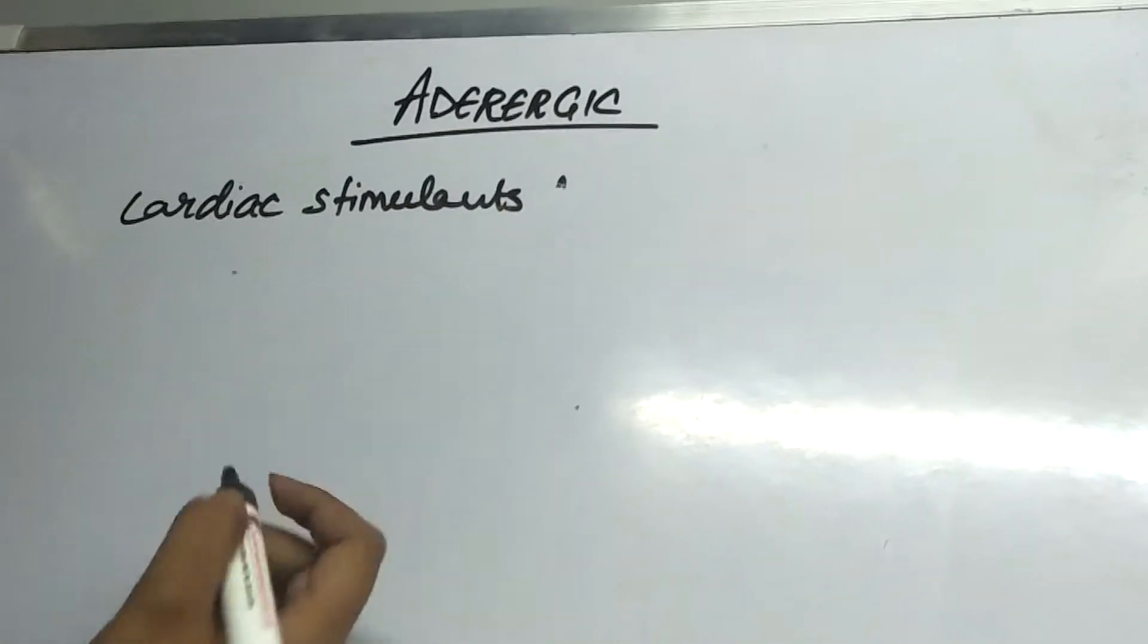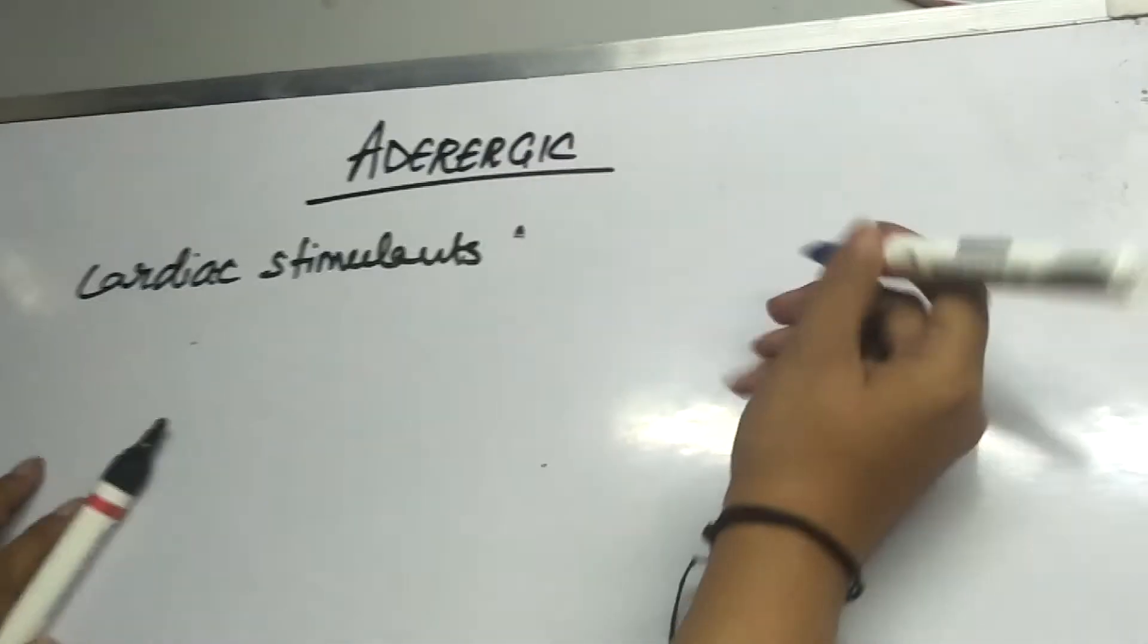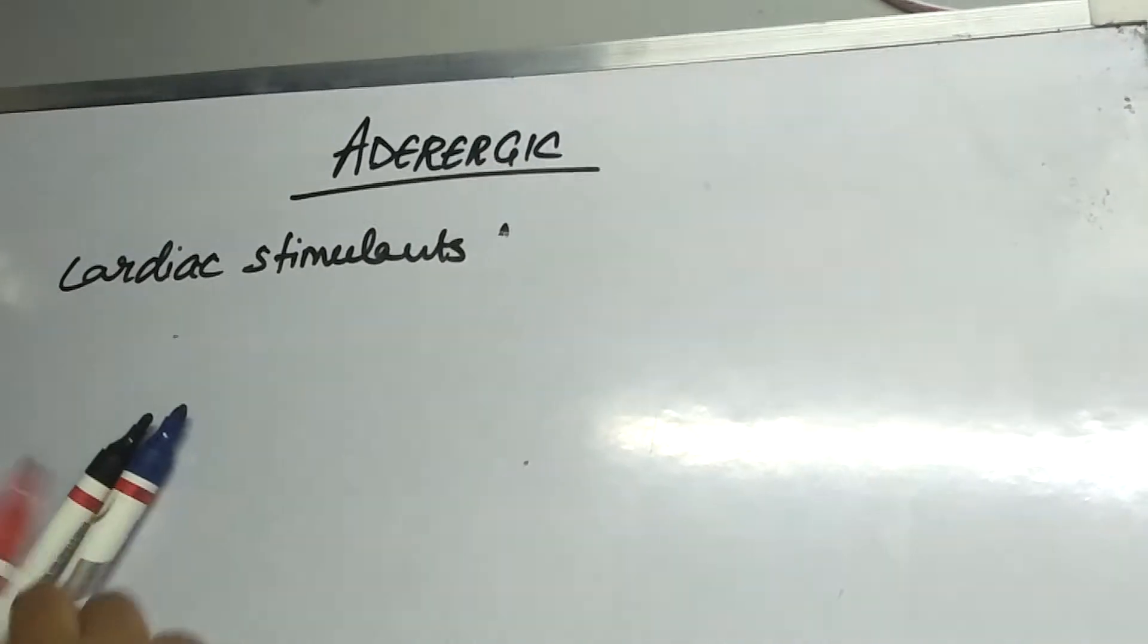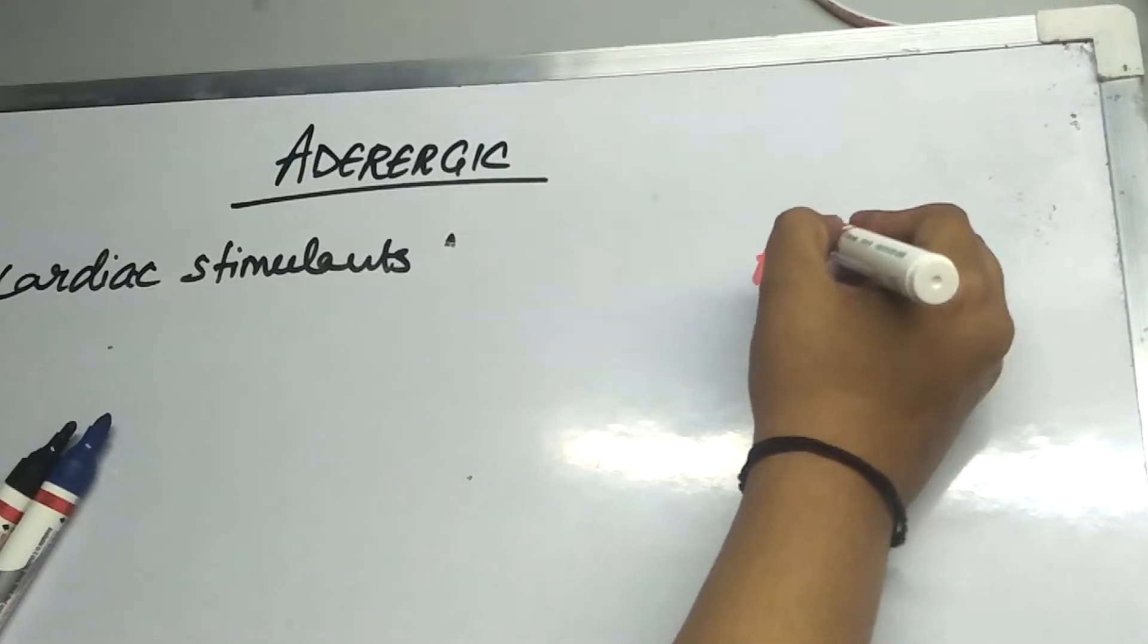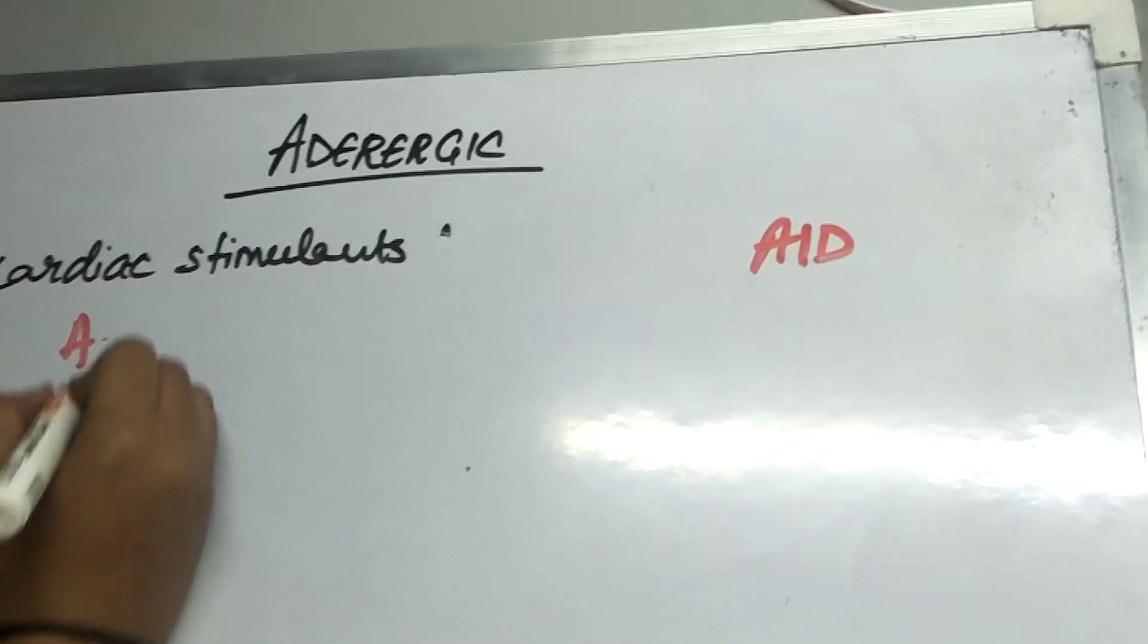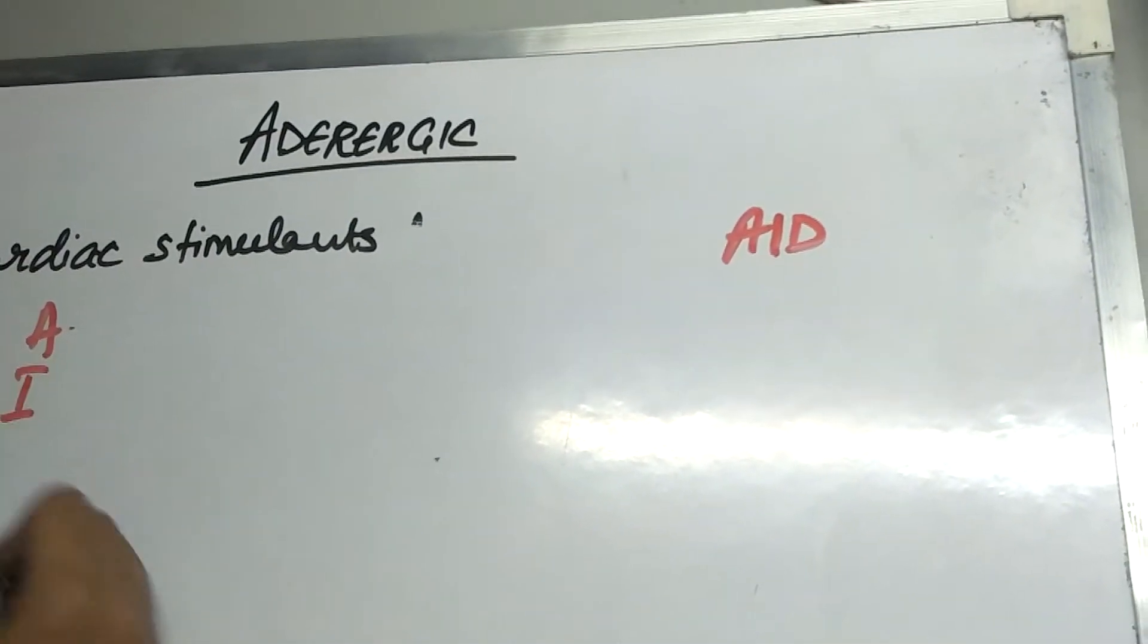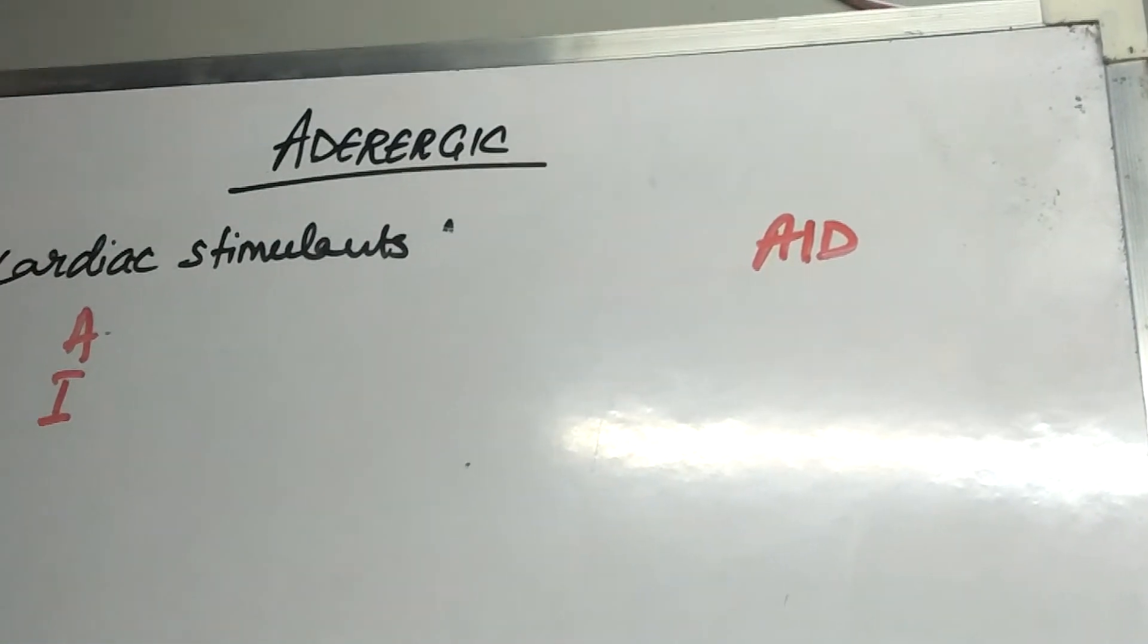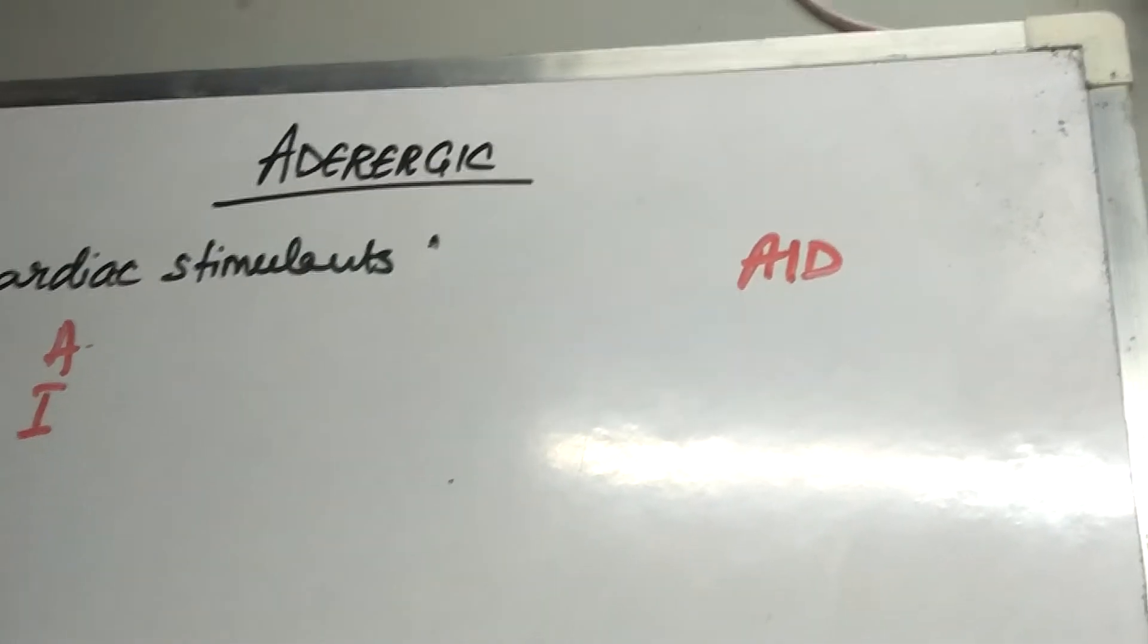Next classification is cardiac stimulants. For this the mnemonic is AID. From A it is adrenaline, from I isoprenaline, and from D it's dopamine.